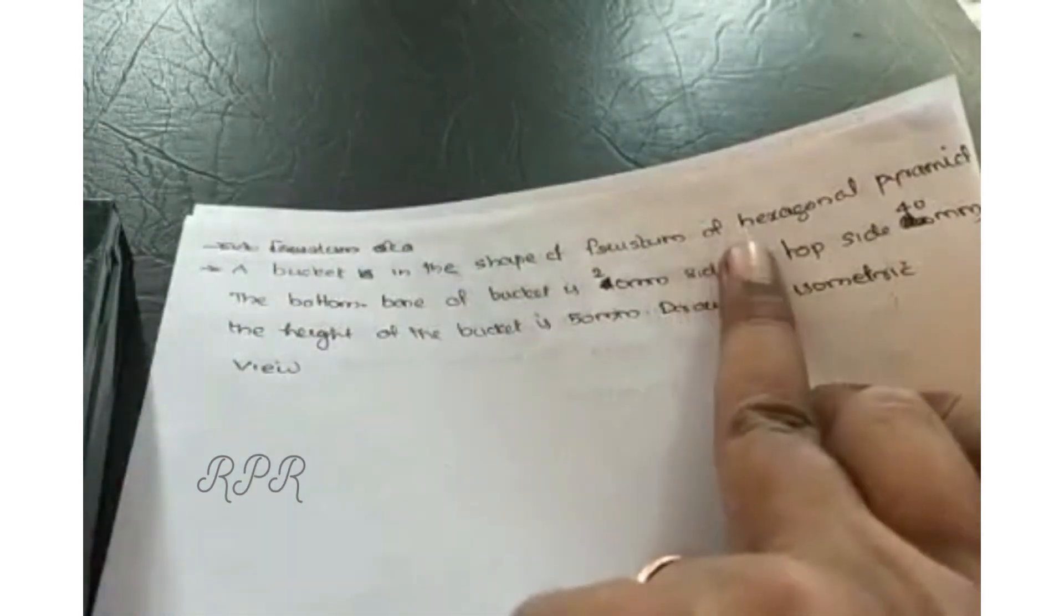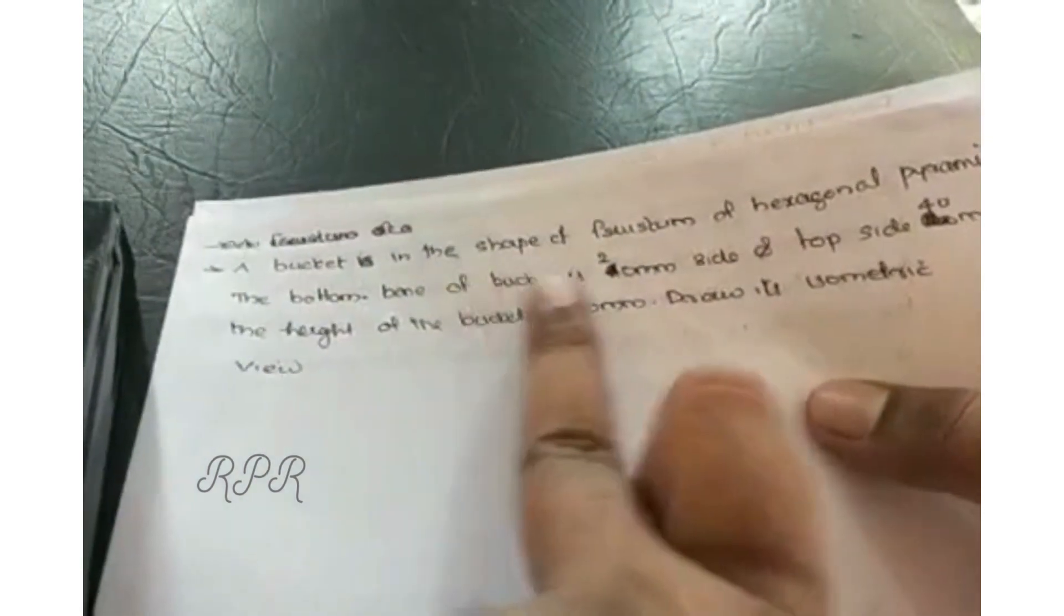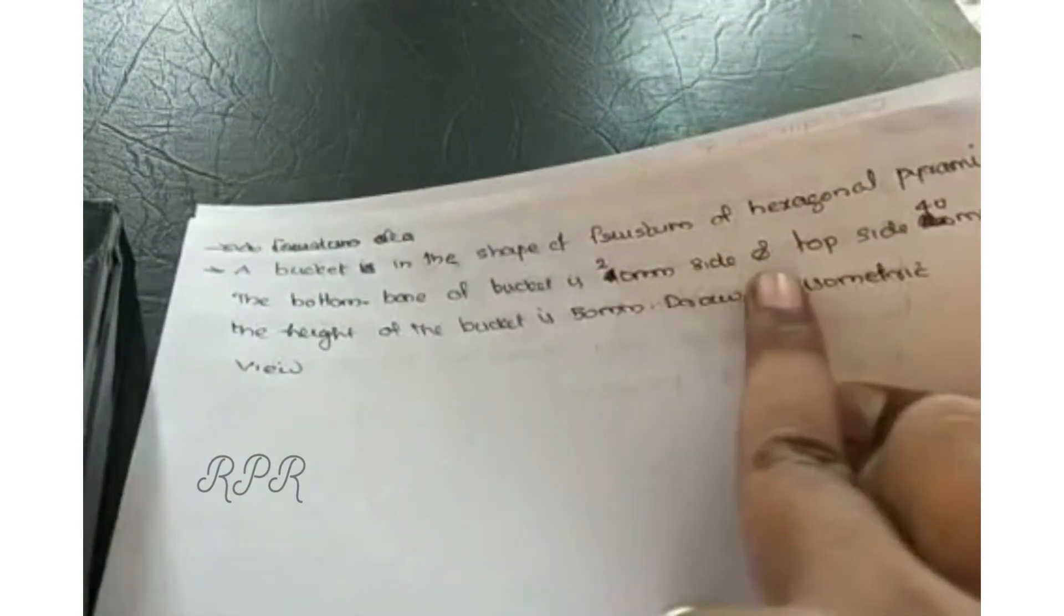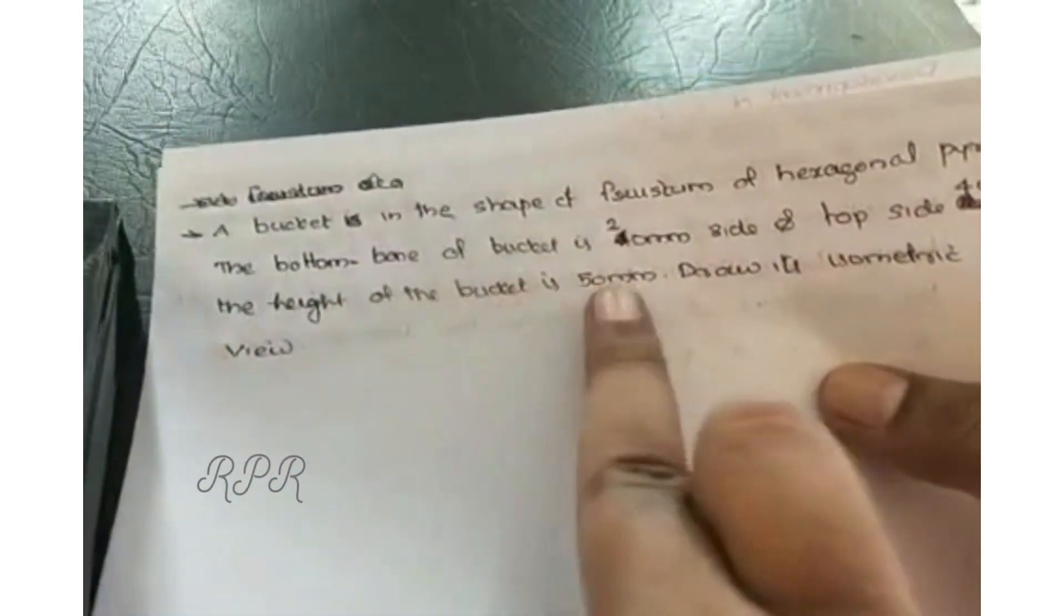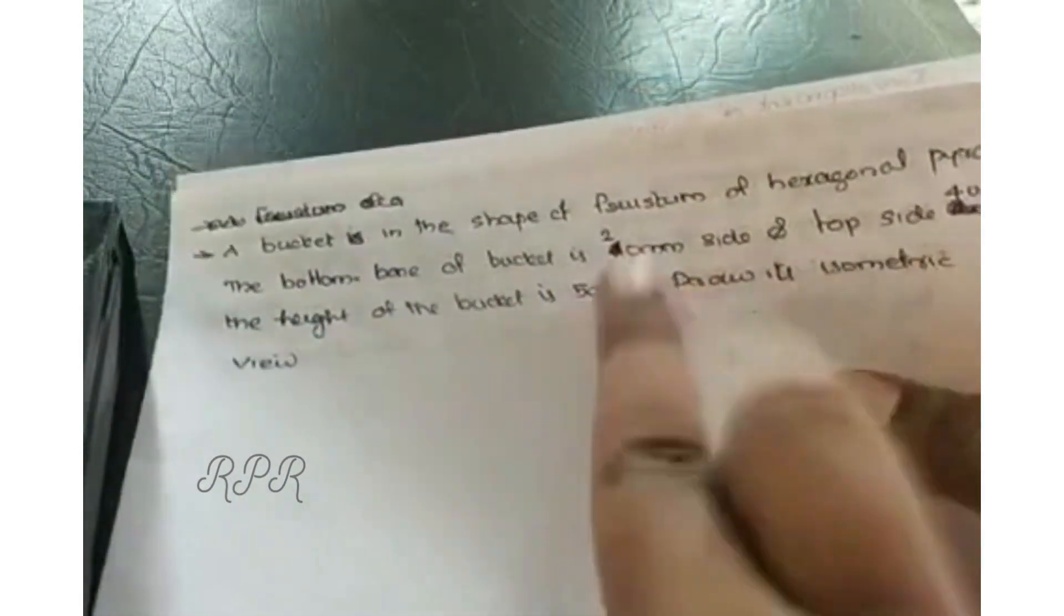A bucket is in the shape of a frustum of a hexagonal pyramid. The bottom base of the bucket is 20mm and the top side is 40mm. The height of the bucket is 50mm. Draw its isometric view.